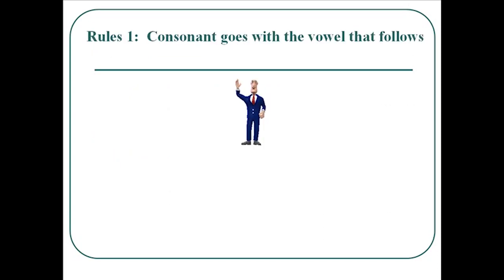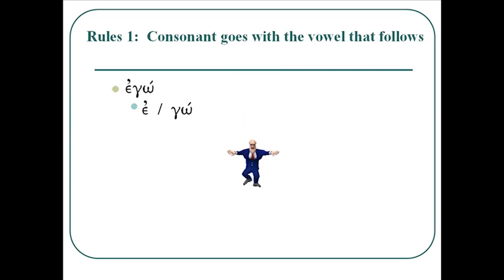Let's look at how this takes shape in Greek. Rule 1: consonant goes with the vowel that follows it. So the word ego — the epsilon on the front is by itself. The gamma goes with the omega that follows it. Same type of thing with lego: the lambda goes with the epsilon that follows it, then there's a break, because the gamma goes with the omega that follows it.